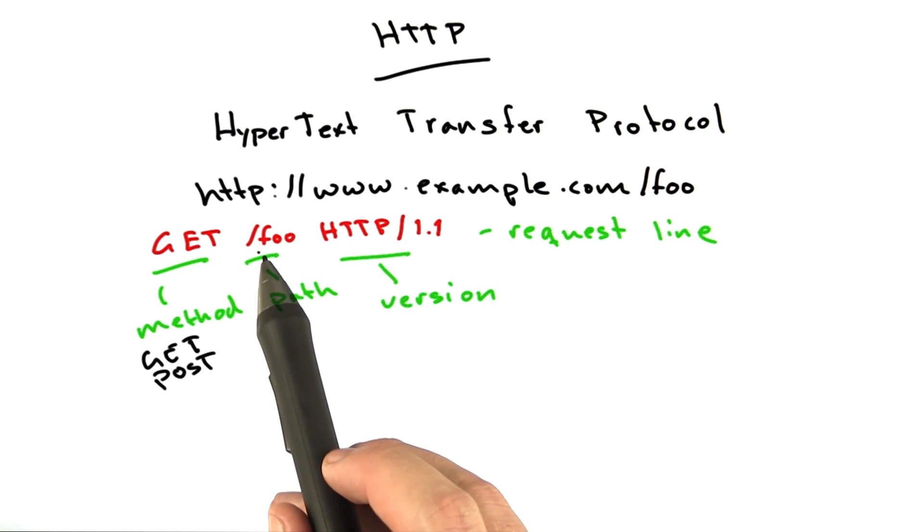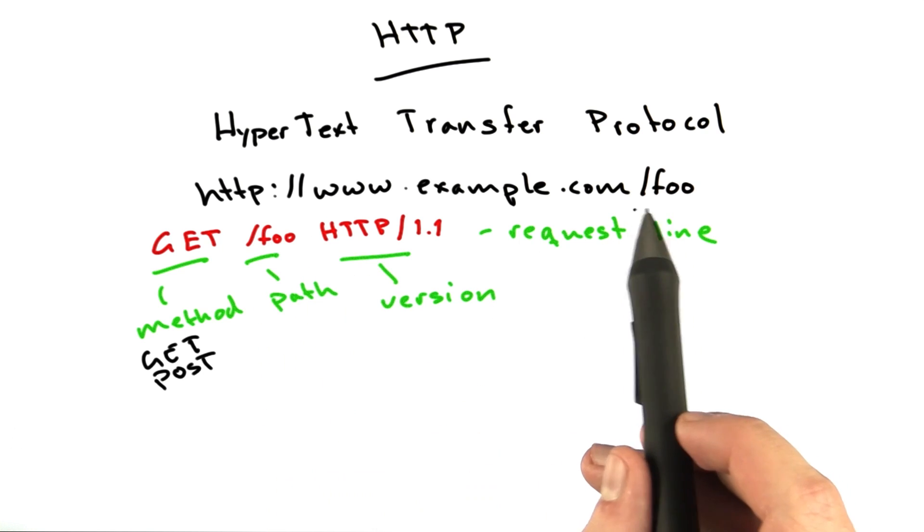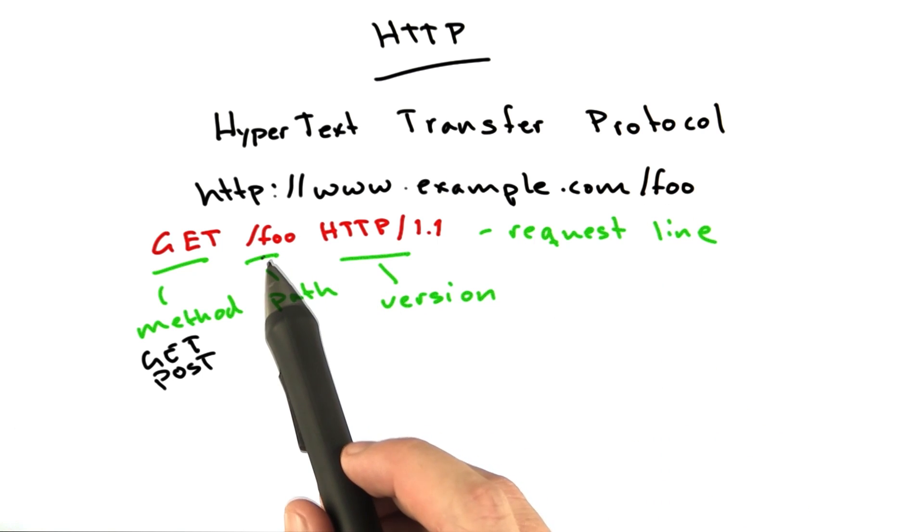Next is the path. In this case, it's /foo. You remember this from the URL, but the path from the URL comes here. This is the actual document we're requesting from the server.